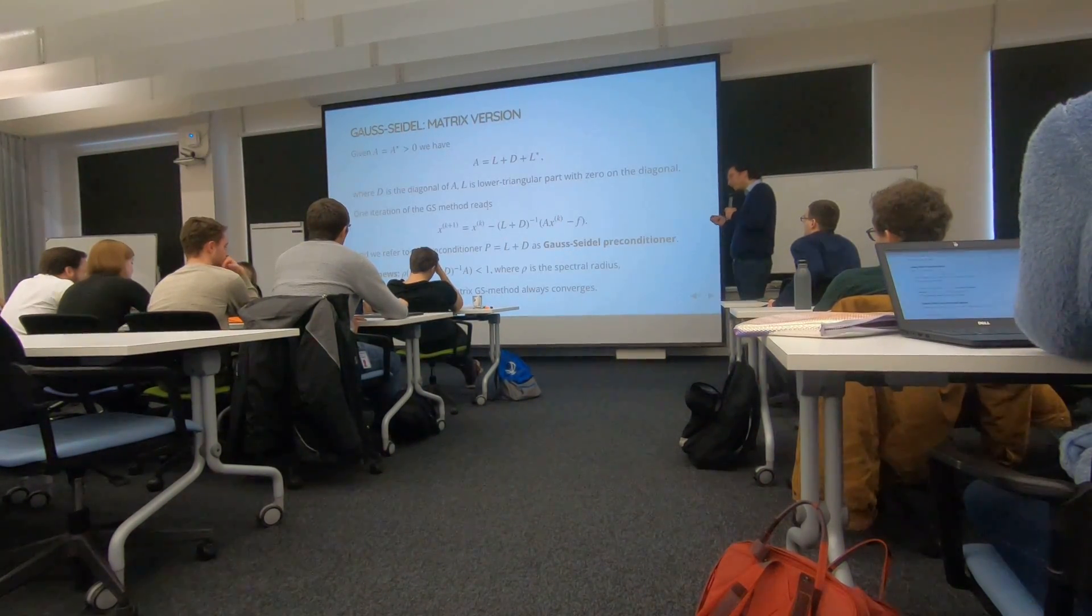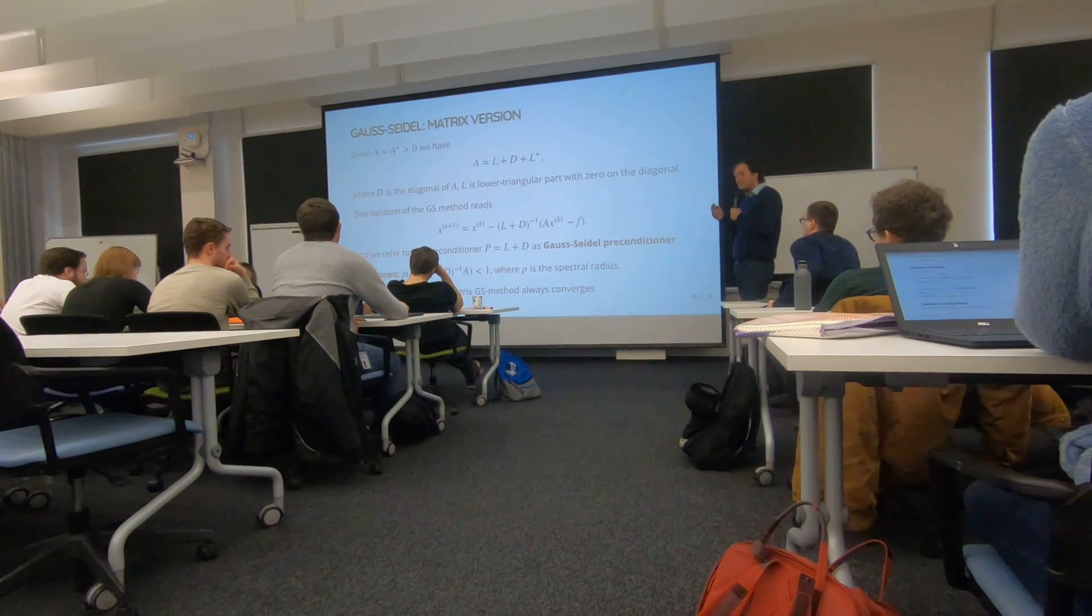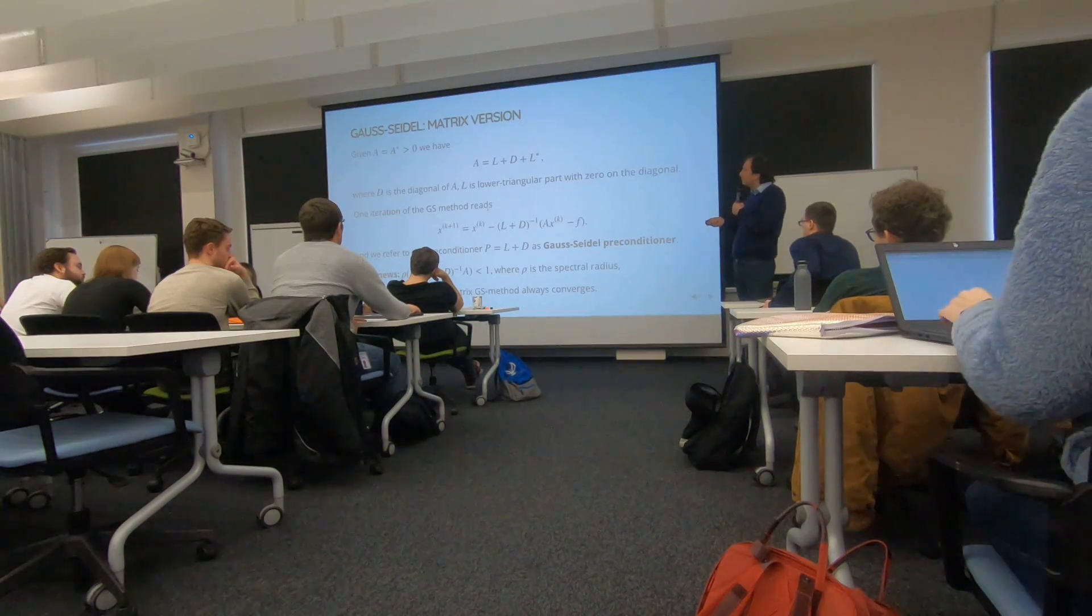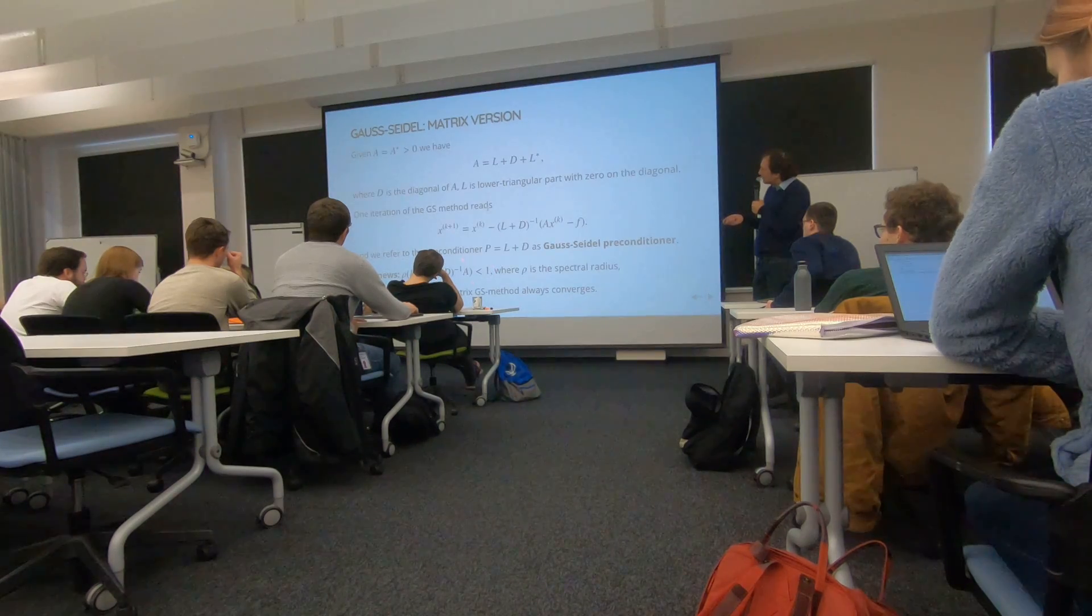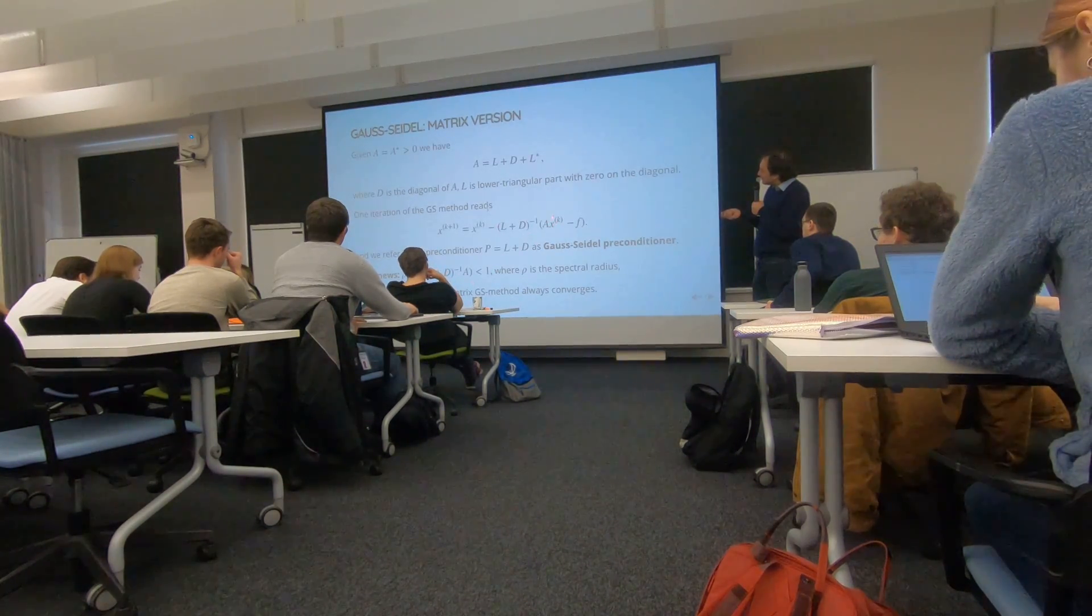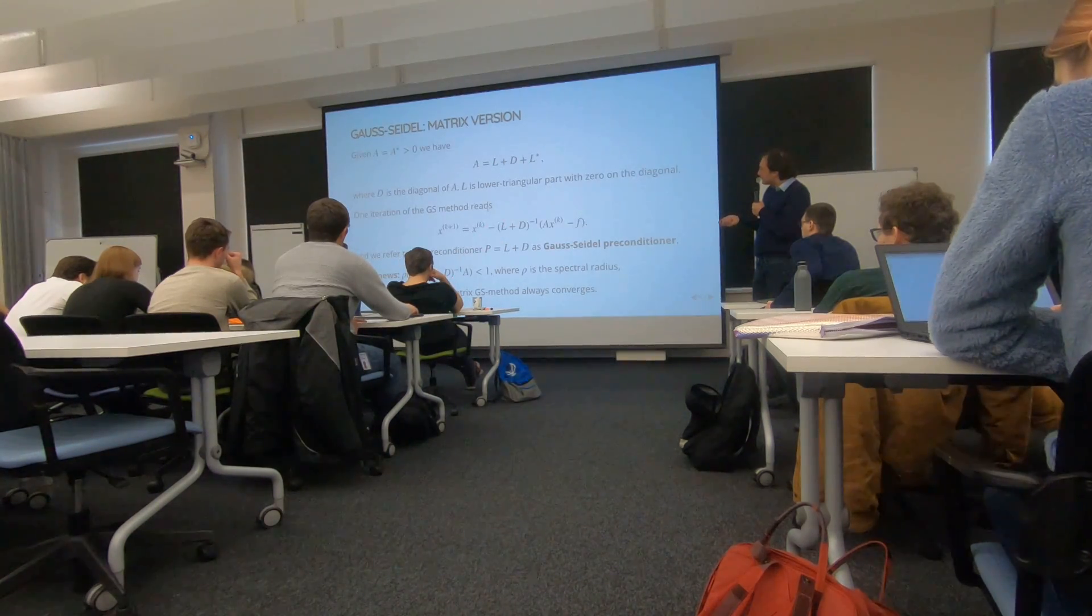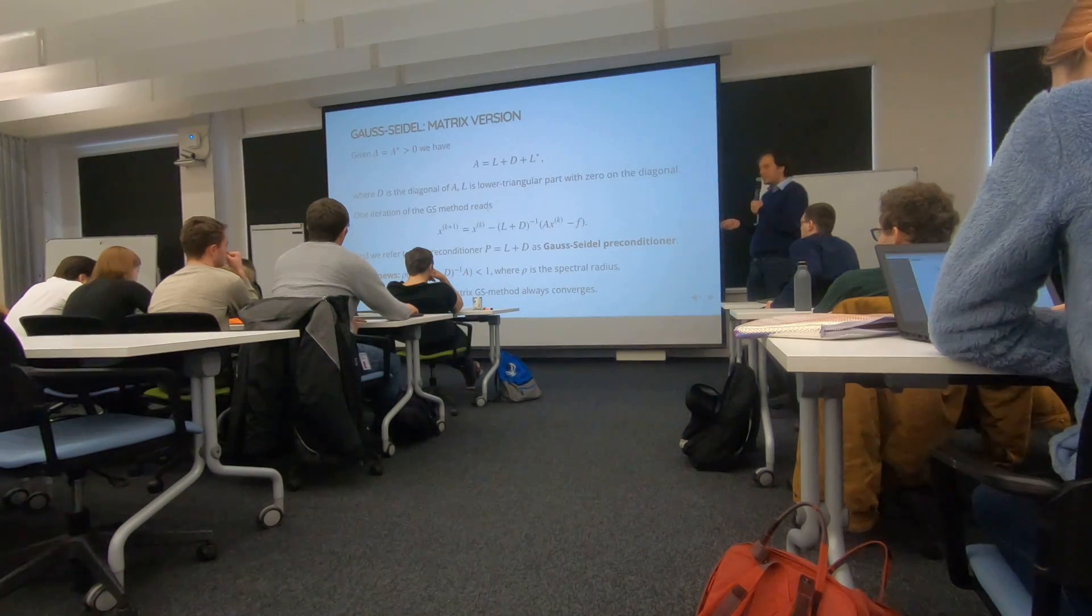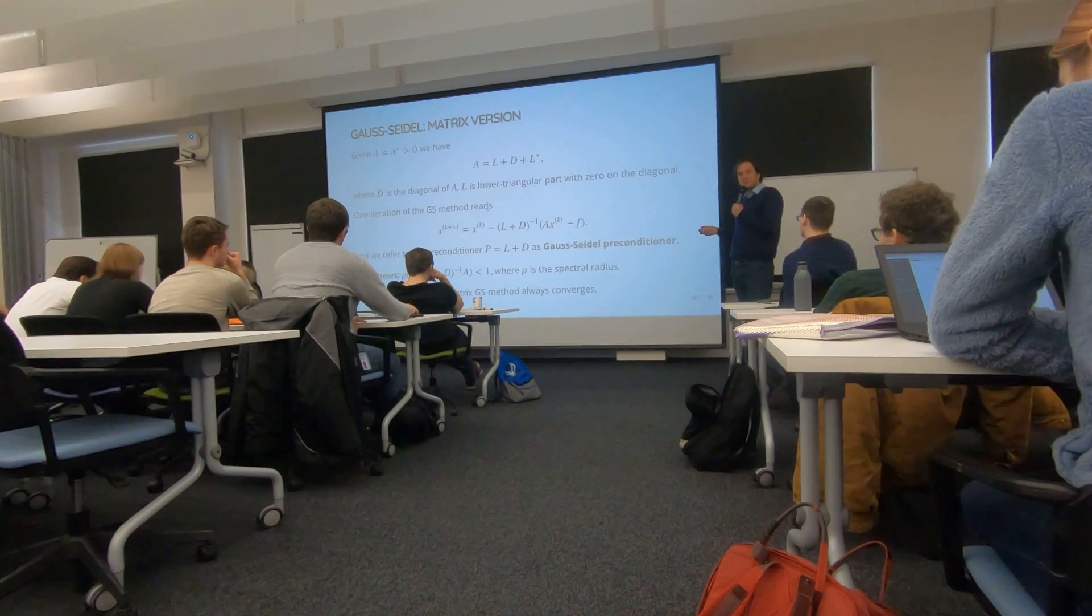So again, if you take the Laplace equation, for example, in two dimensions, the condition will be significantly smaller for the Gauss-Seidel method. So you can also show that this is a good exercise. So what's the iteration matrix here? The iteration matrix here is identity minus L plus D inverse A. So that's the iteration matrix.